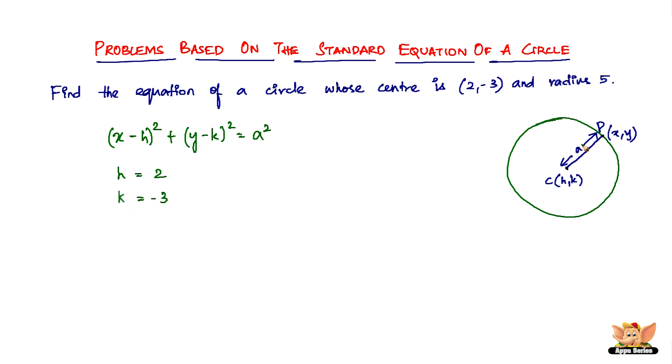And the radius is 5 which is denoted by a. So a = 5. So all you have to do is substitute the values of h, k and a in this standard equation which will lead you to the equation of the circle in question.